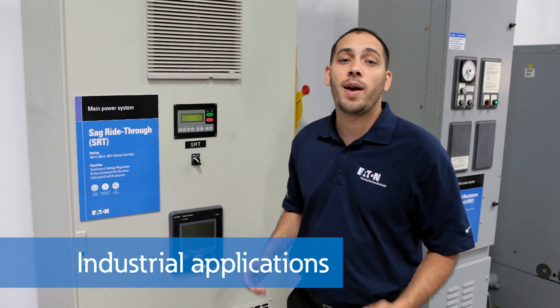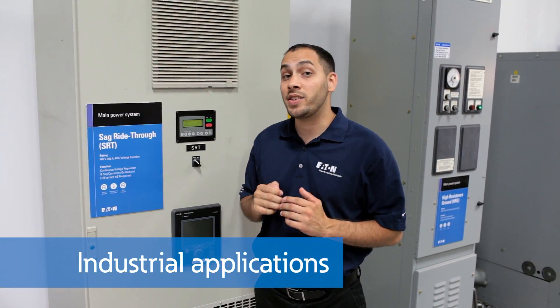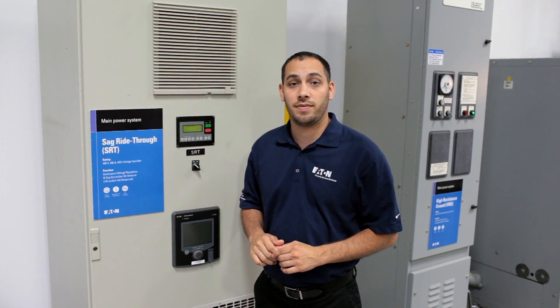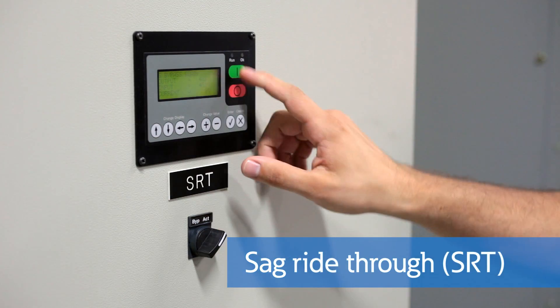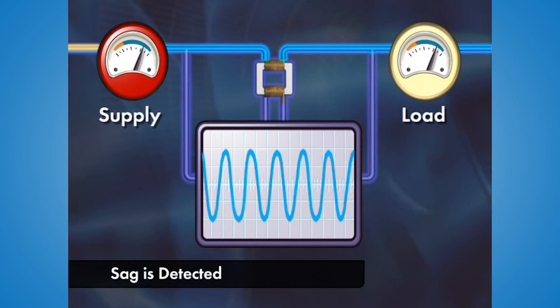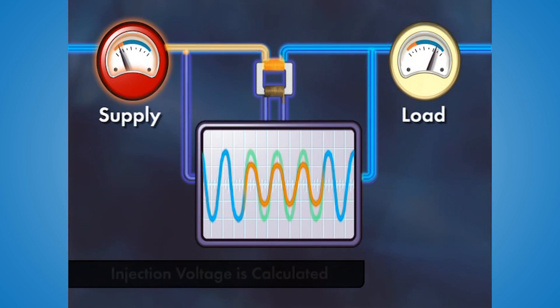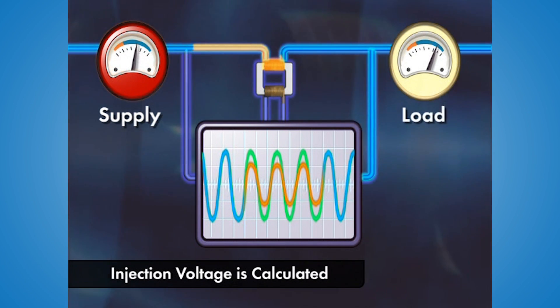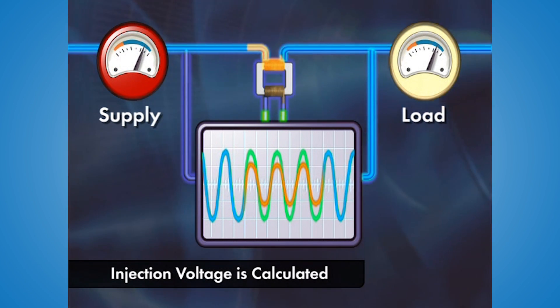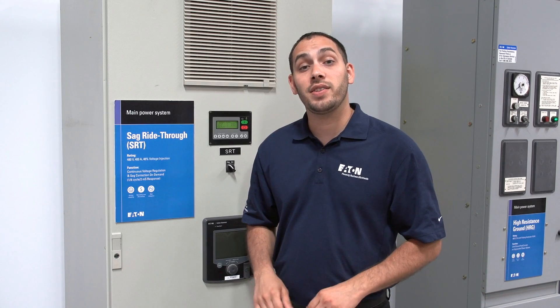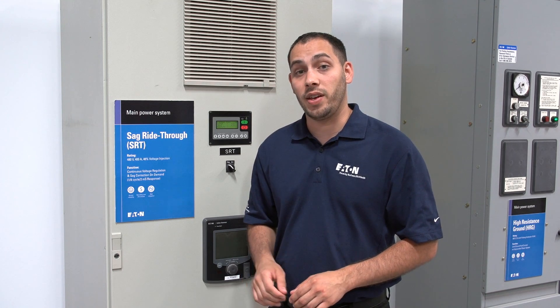For industrial applications where batteries may not necessarily be appropriate, there are other methods of sag compensation. An SRT, or sag ride-through, continuously monitors the incoming voltage and, in the case of a fault, injects the required compensating voltage into the system so that the downstream devices see an acceptable voltage level. An SRT is considered a system solution to protect many loads or the entire facility.